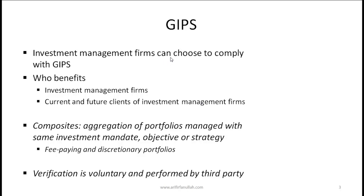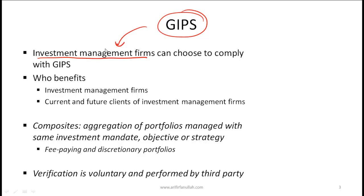A few larger points related to GIPS. Number one: investment management firms can choose to comply with GIPS. Who complies? It is not the investor but the investment management firm. GIPS applies to firms that are managing money or investments and need to report their performance — not to brokerage houses or banks. Secondly, GIPS is not mandatory; an investment management firm can voluntarily choose whether or not to comply.